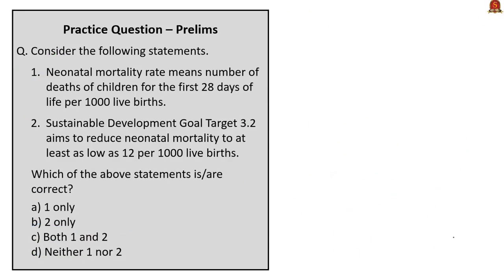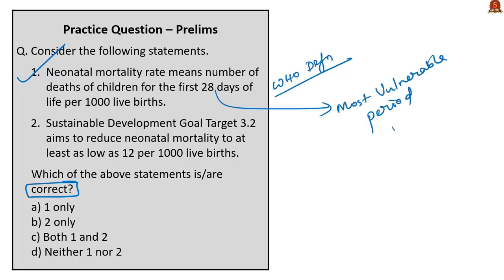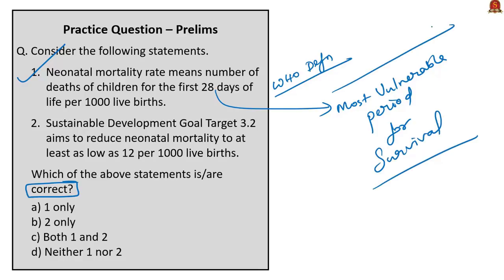This question gives two statements asking which are correct. The first statement: neonatal mortality rate means the number of deaths of children in the first 28 days of life per thousand live births, according to WHO. This is the exact definition of neonatal mortality rate, so the first statement is correct. This is the most vulnerable period for a child's survival, requiring highly efficient and proper healthcare.